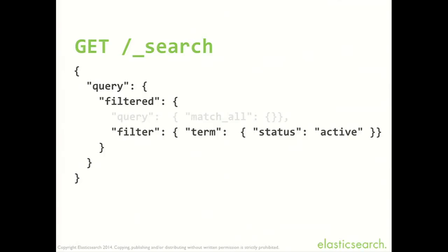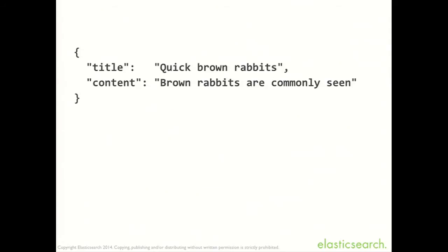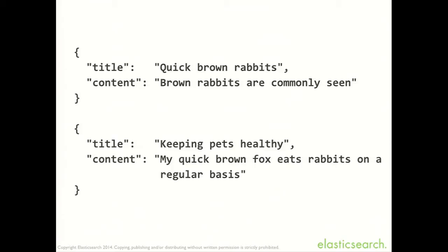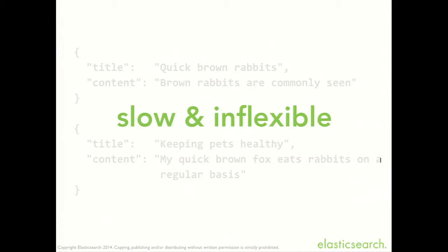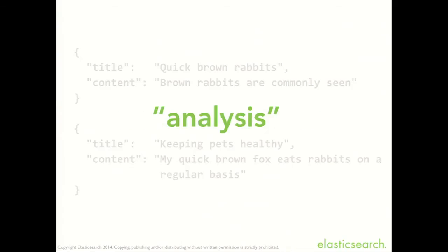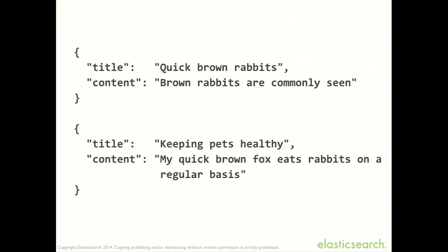The next thing to think about is how your data is indexed. Let's say we've got these two documents: 'Quick brown rabbits, brown rabbits are commonly seen' and 'Keeping pets healthy, my quick brown fox eats rabbits on a regular basis.' We've all done this — put this into an SQL database and run a query like wildcard brown, wildcard fox. That's slow and inflexible. Instead, what we want to do is take these string values and pass them through an analysis process. Essentially, we want to take all of these words, divide them up into separate words, and then normalize those words.